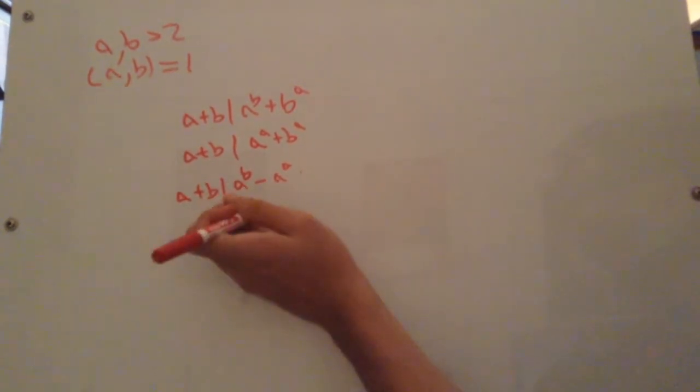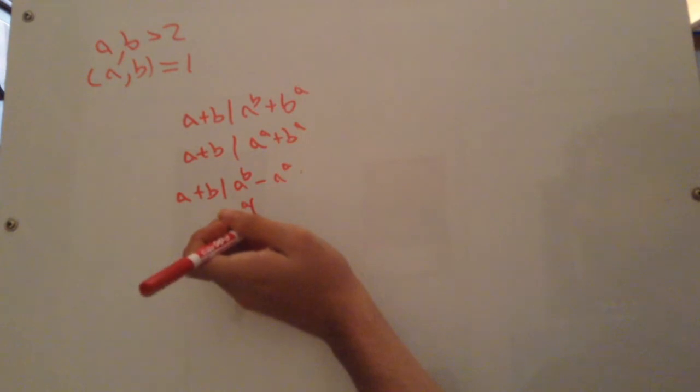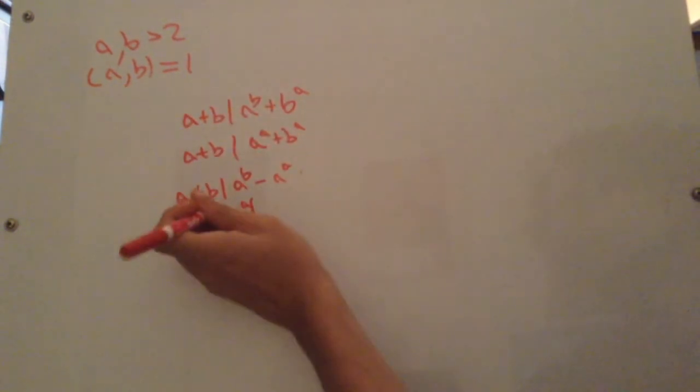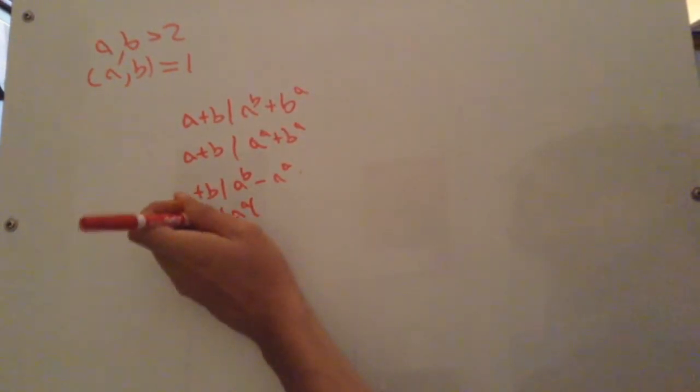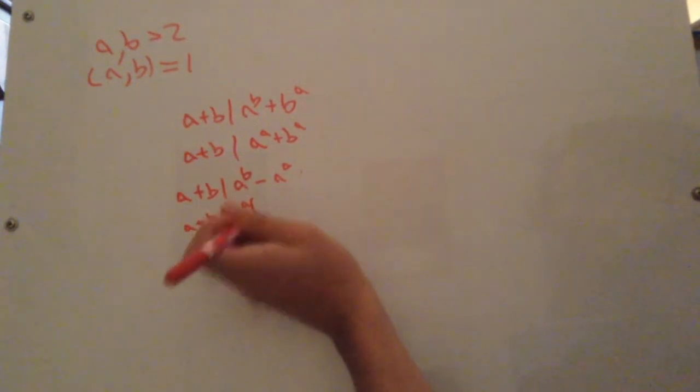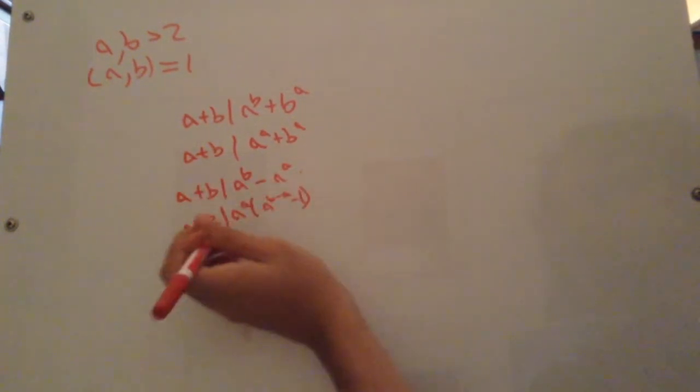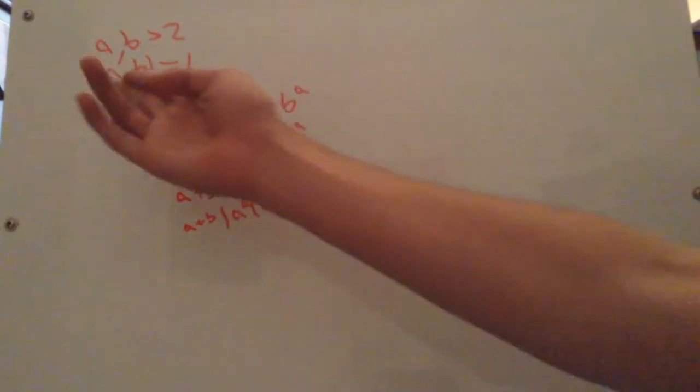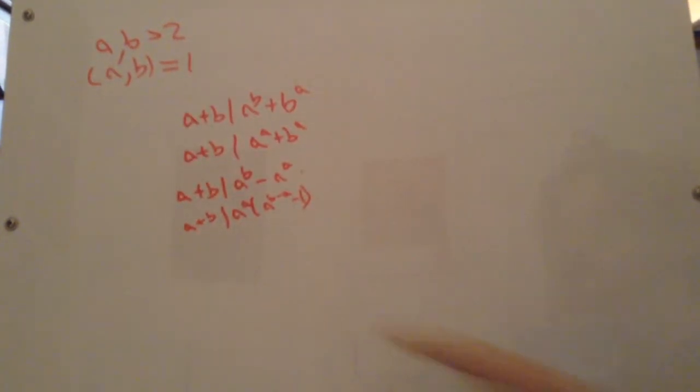because we're just going to get reciprocals and then we can just switch everything around if it's the other way. So we have a to the a, a to the b minus a minus 1. Now, a, b common divisor is 1, so the common divisor between a and a plus b is also going to be 1.